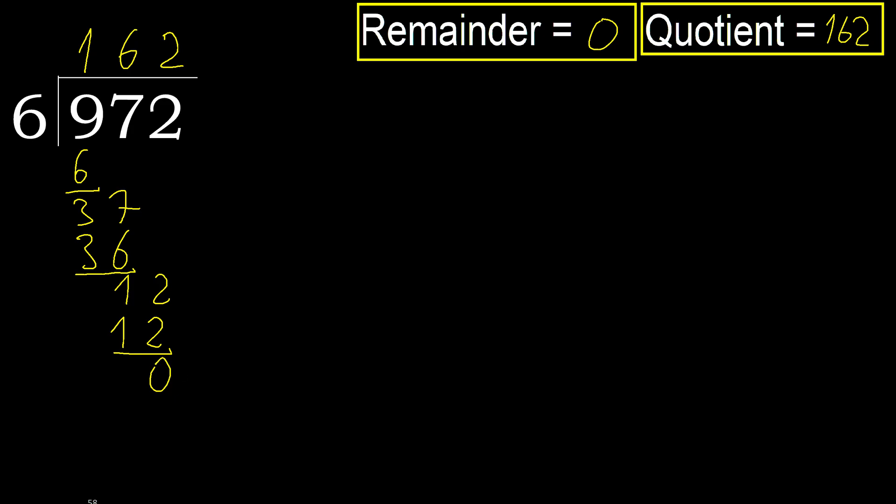Ok, remainder is 0. Therefore 972 divided by 6 is 162.